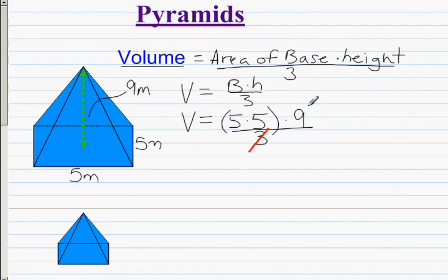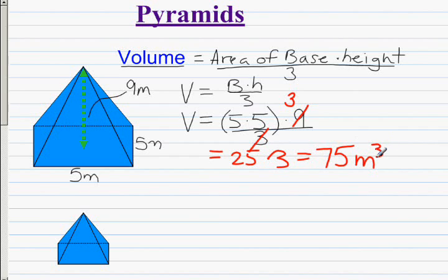So the 3 cancels out with the 9, and we end up with 25 times 3, which equals 75. And since it's volume, it's meters cubed.